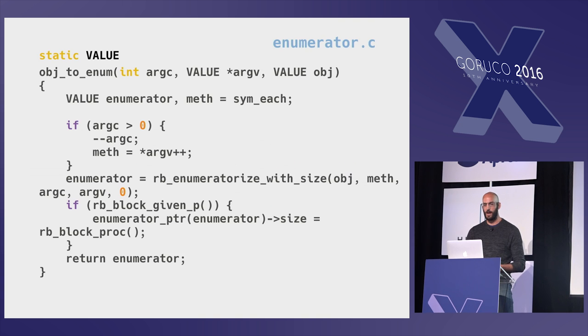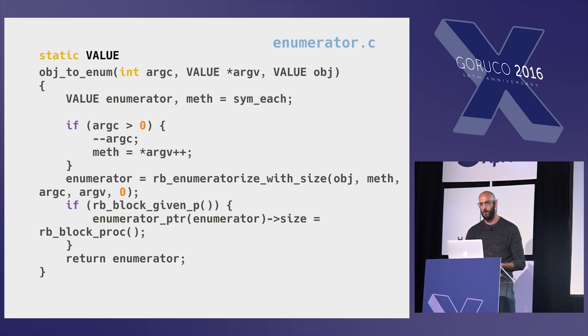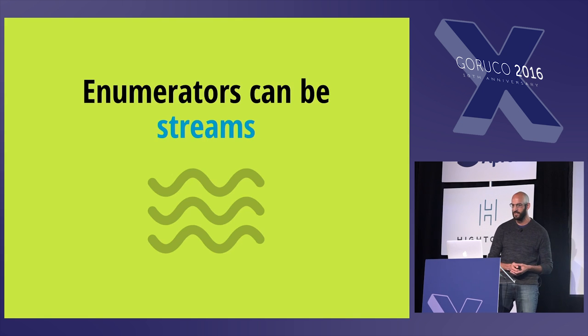In case you think I'm making up this term "enumeratorize," note that I stole it from the MRI source code for the to_enum definition in enumerator.c. Yes, naming things is really hard.